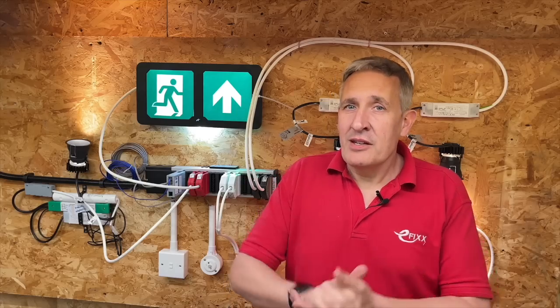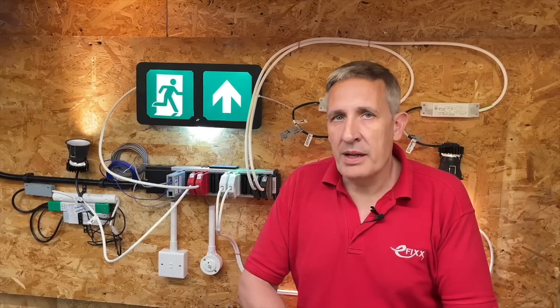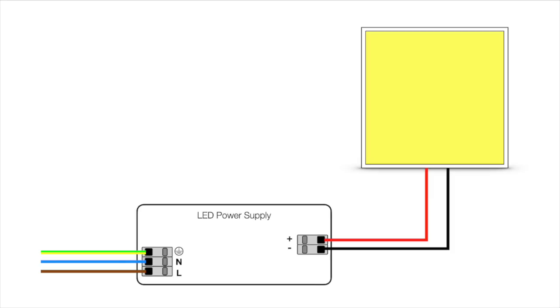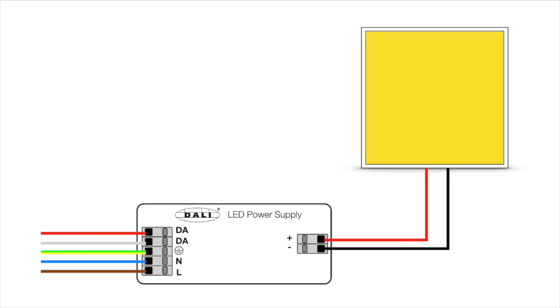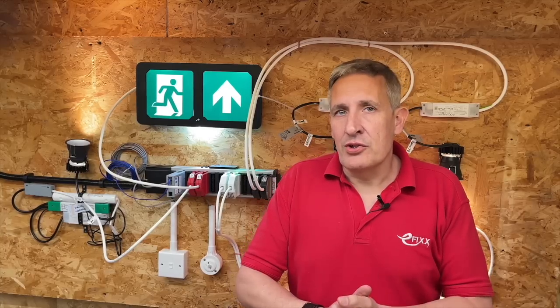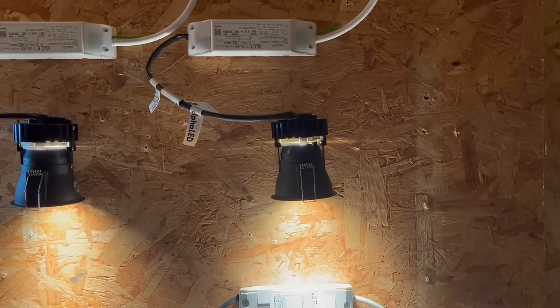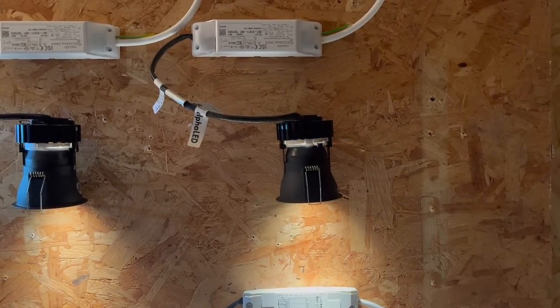This brings us neatly to the letter I in DALI — the Interface. A DALI lighting power supply or ballast has two sets of terminals: the familiar mains connection to power the actual light source, and an additional set of control terminals, the Interface. The Interface input or DALI connection allows a dedicated control signal to communicate with the electronics inside the ballast or LED power supply, allowing the power output of the device to be accurately controlled, enabling smooth dimming.